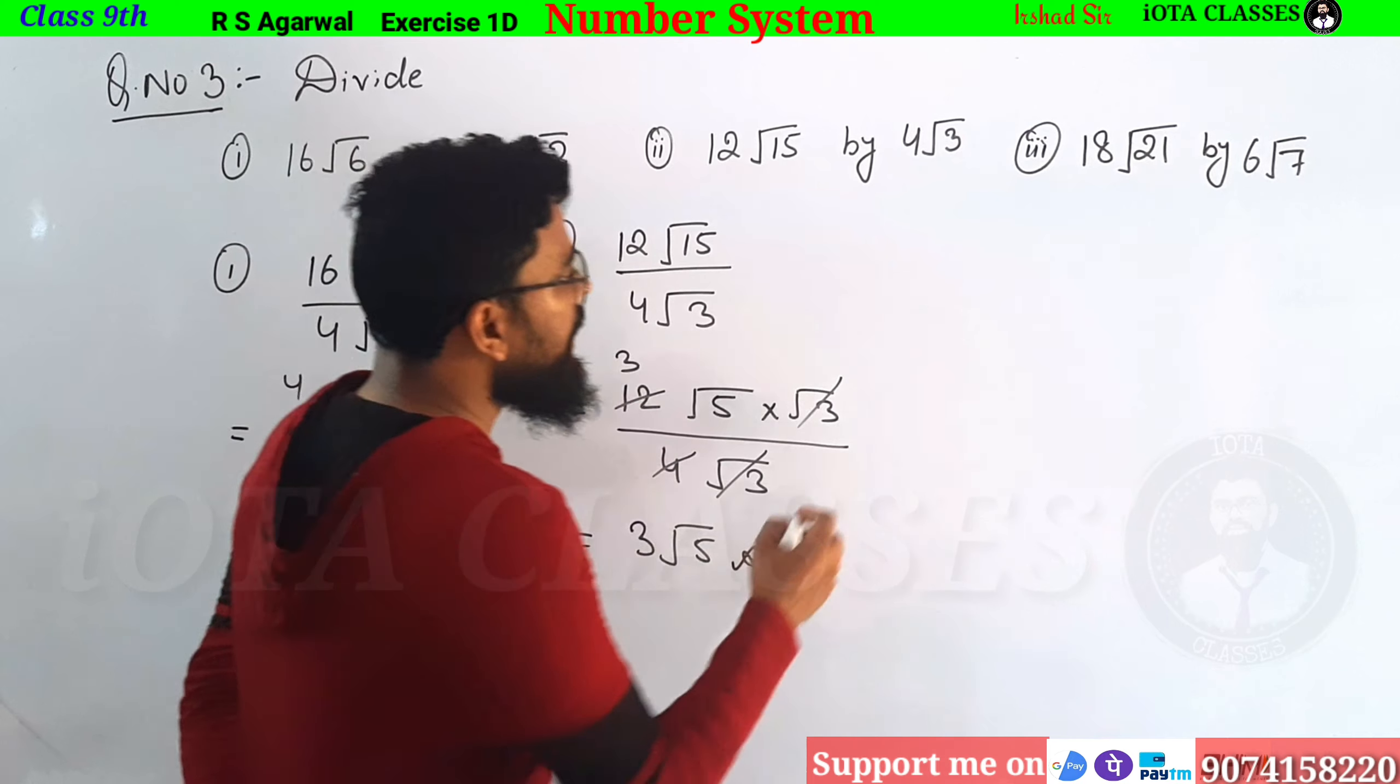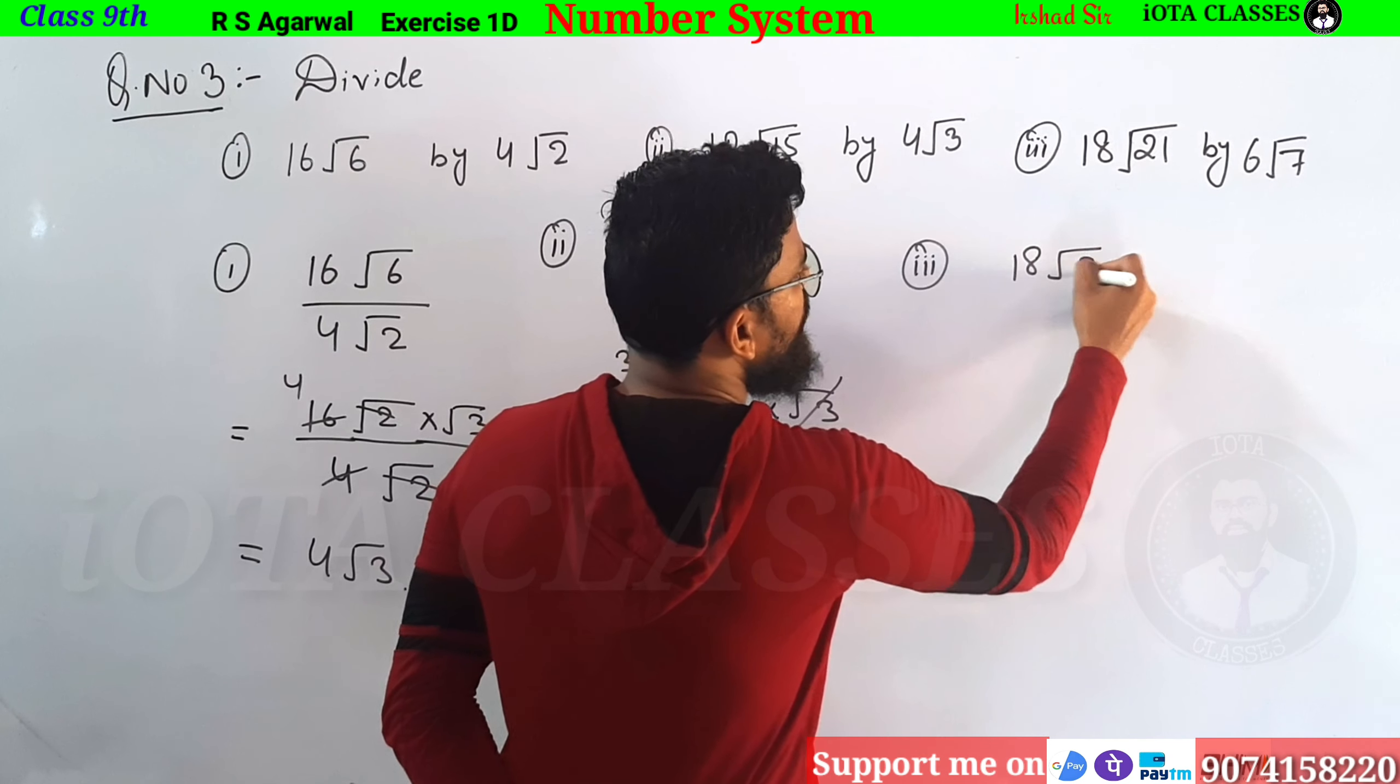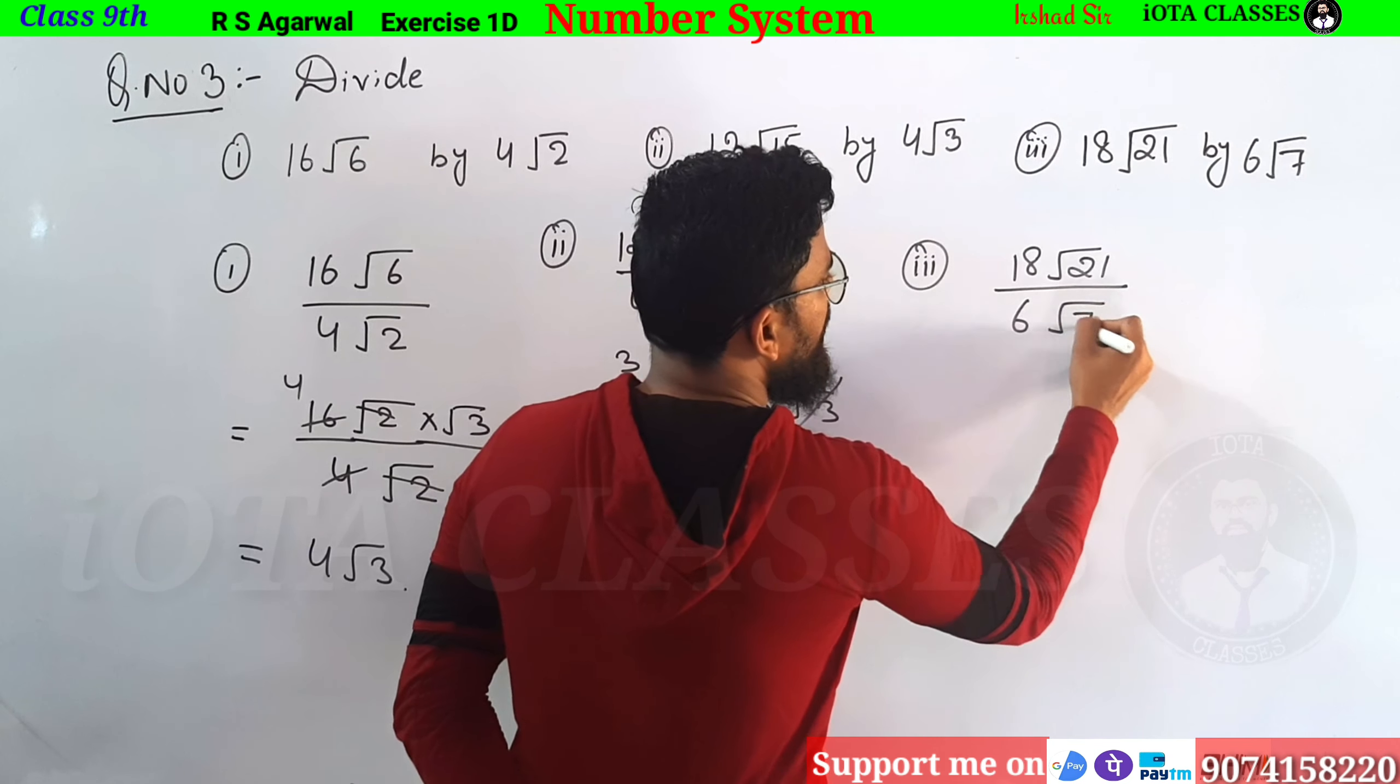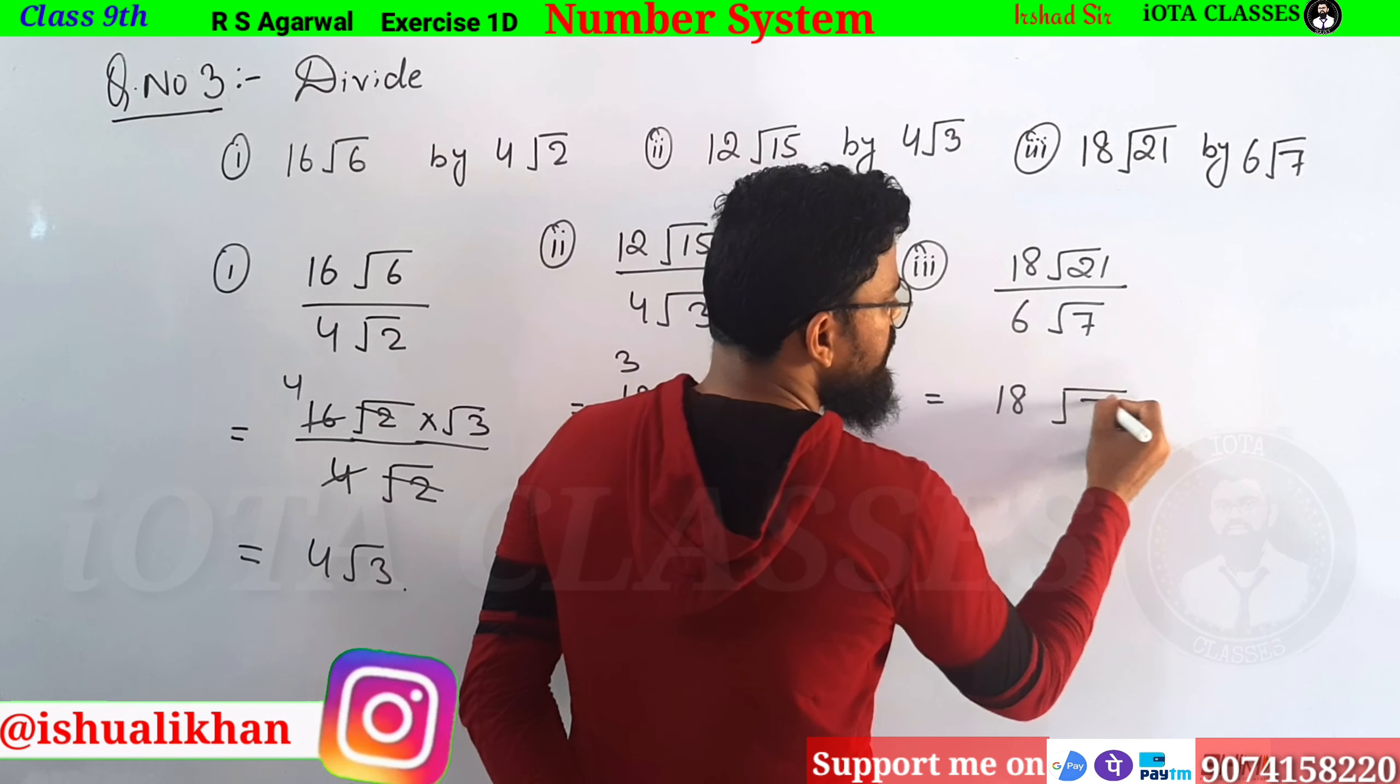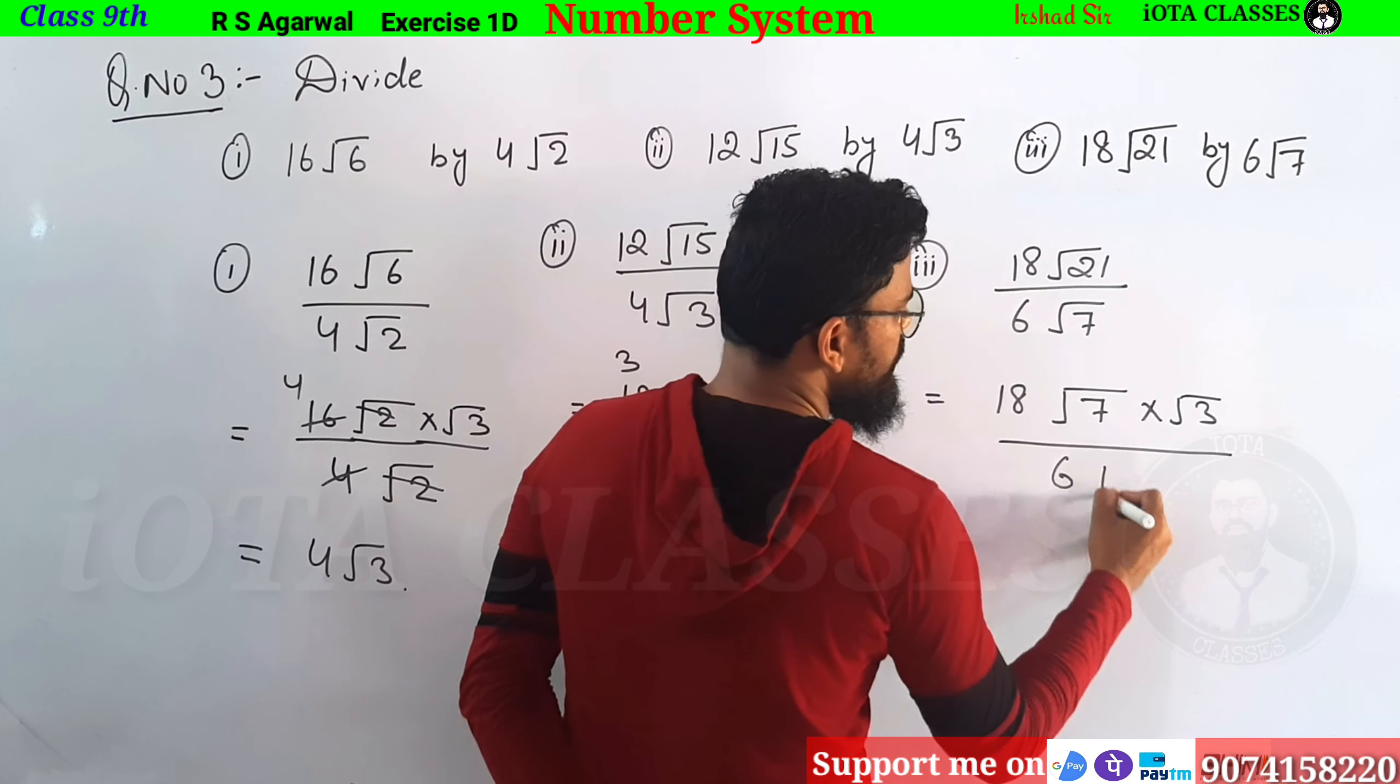Then the third one. The third one is 18 root 21 by 6 root 7. We will solve this as we were doing. This is our 18. We will solve root 21, so this will become root 7 times root 3.